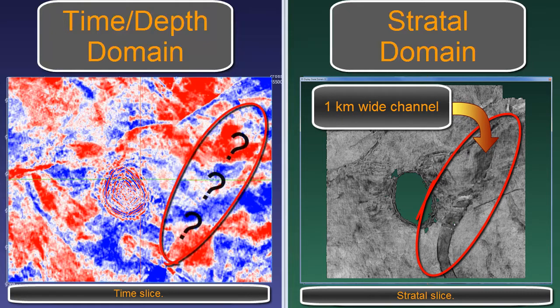That same one-kilometer-wide channel is difficult to find and interpret in the time and depth domain because it is cut into seven different fault blocks as it crosses the survey area, all of which are at different levels and rotated with respect to each other.